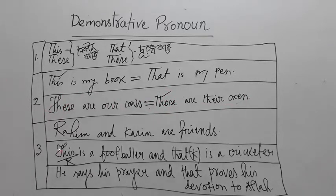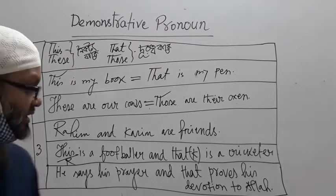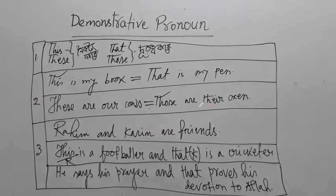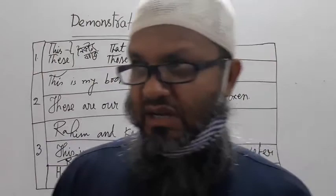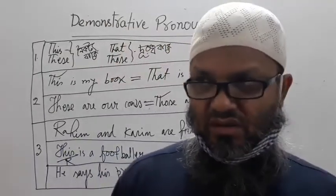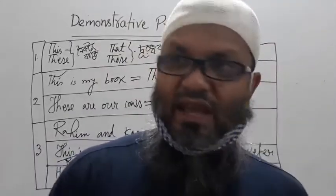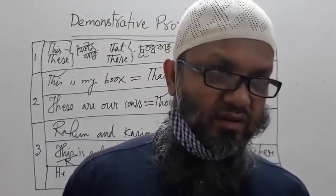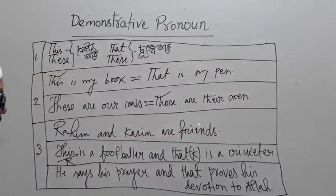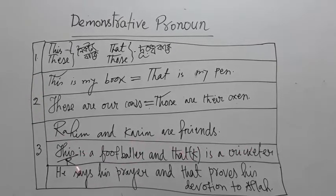'This' and 'that' can also be used instead of any noun or noun clause. For example, Rohim and Kori are friends — one is close to me, another is standing at some distance. I can say 'This is a footballer' meaning Rohim, who is close, and 'That is a cricketer' meaning Kori, who is farther away.